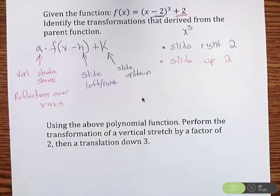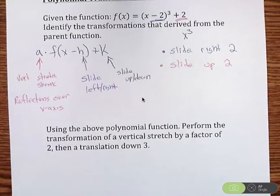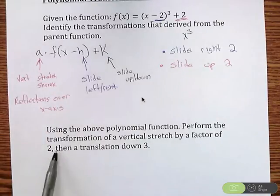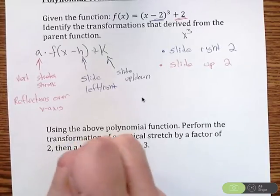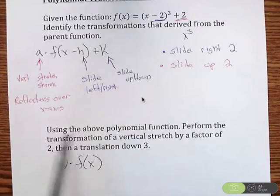Part 2 of this problem, we're going to use the above polynomial function, so this one up here. And we're going to perform the transformation of a vertical stretch by a factor of 2, then a translation down 3. So a lot of this is all about setup and not being lazy here. So if I want to do a vertical stretch by a factor of 2, that is a. So in place of a, I'm going to put 2, since we want a vertical stretch by 2. So I'm going to have 2 times f of x. Notice how I'm not putting h or k because we're not dealing with h and k yet. We're just worrying about a vertical stretch by a factor of 2. So 2 times f of x.